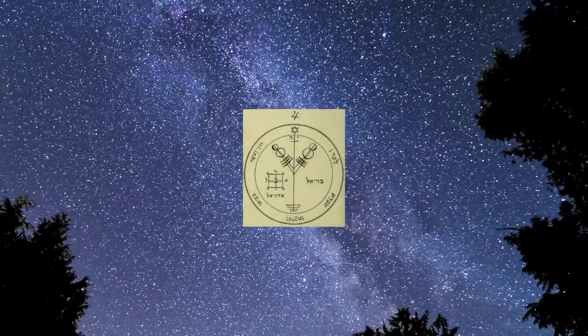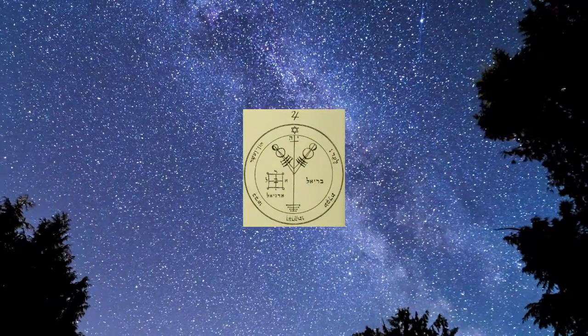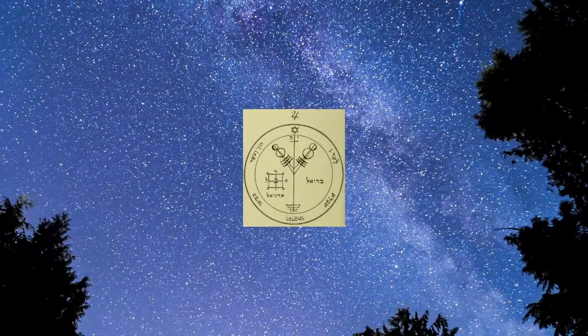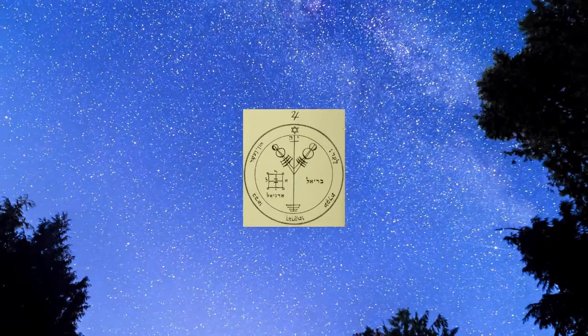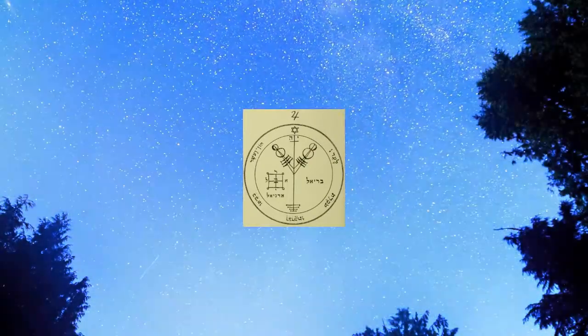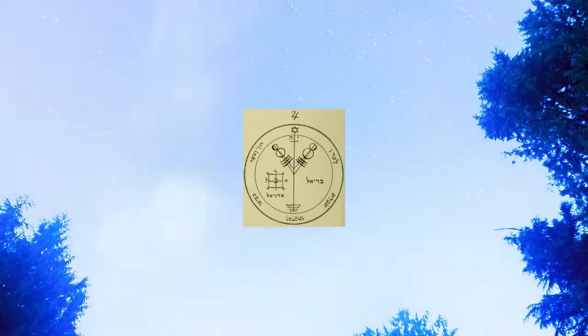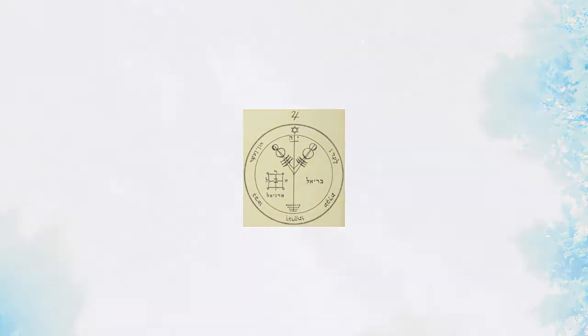The fourth sigil of Jupiter. This sigil serves to acquire riches and honor. It should be engraved on silver, the day and hour of Jupiter, when Jupiter is in the sign of cancer. Psalms 112 verse 3 is also written around this sigil.